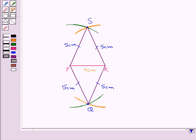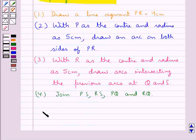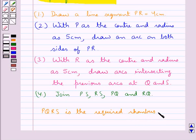So, we say this PQRS is the required rhombus. This completes the session. Hope you have understood the solution of this question.